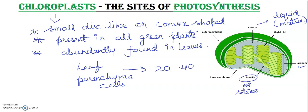The connecting membrane between grana is called the stromal lamella. The thylakoids are stacked like a pile of coins, and many such piles are called grana. Various grana are joined together by intergrana and stromal lamella.